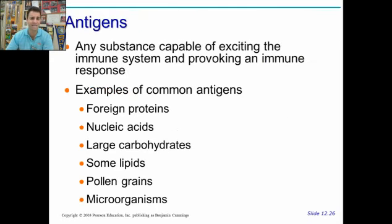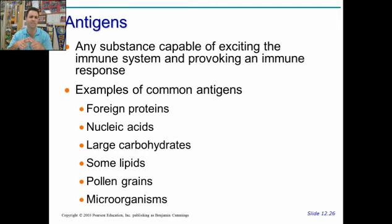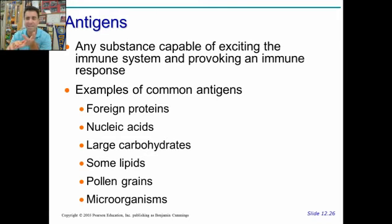So what is an antigen exactly? Any type of substance that provokes an immune response. Your own surface proteins we don't call antigens because they are of self and you don't have an immune response. But anything else that causes a response you call an antigen — so this includes DNA, carbohydrates, pollen, some fats, any microorganisms, that kind of thing.